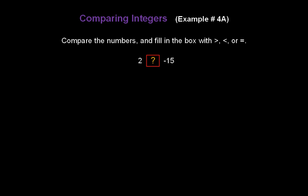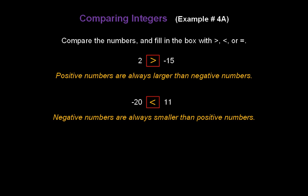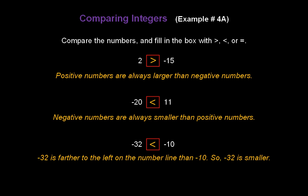First, 2 compared to negative 15. Did you get greater than? Hopefully you did, because positive numbers are always larger than negative numbers. How about negative 20 compared to 11? Did you get less than? Negative numbers are always smaller than positive numbers. Let's try negative 32 compared to negative 10. Did you get less than? Negative 32 is farther to the left on the number line than negative 10, so that makes negative 32 smaller or less than negative 10.